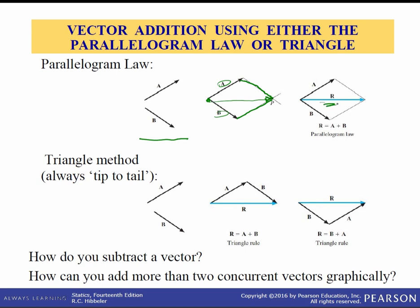The other way is the triangle method — just remember tip to tail. Draw the a vector, then place the tail of b at the head of a. The resultant is just that closing vector. These are triangles and you can use the law of sines, but I don't recommend it because it only works for two vectors in two dimensions. Any time you have more than two vectors or are in three dimensions, you may as well use Cartesian form.